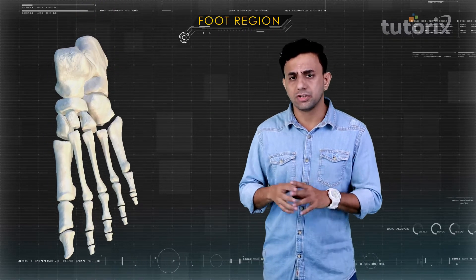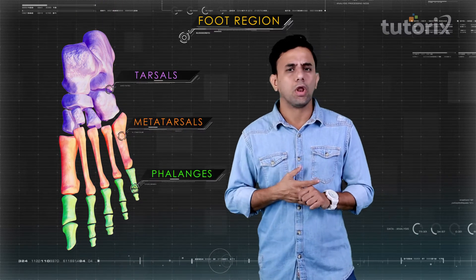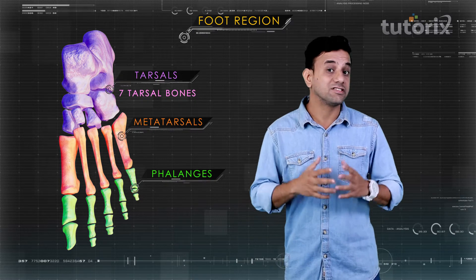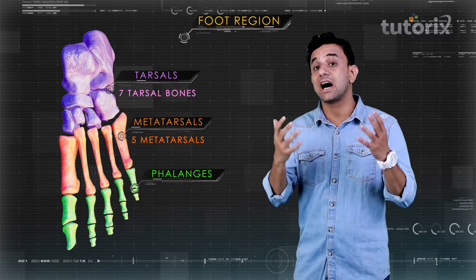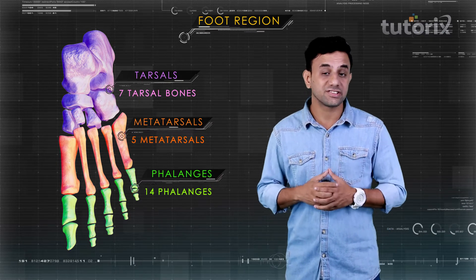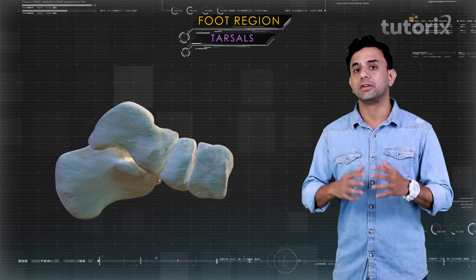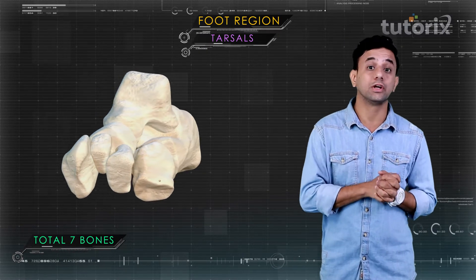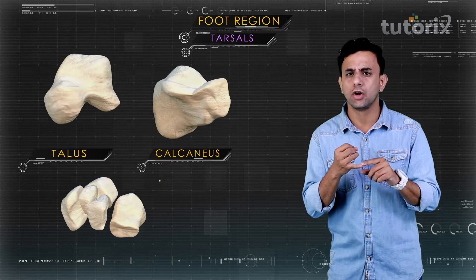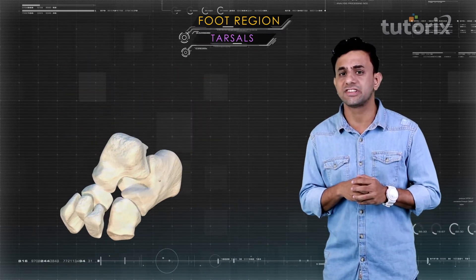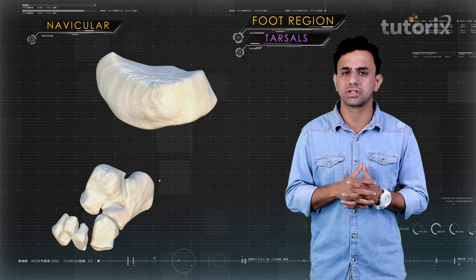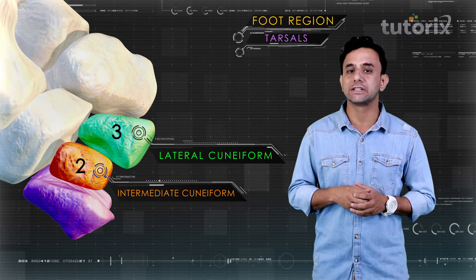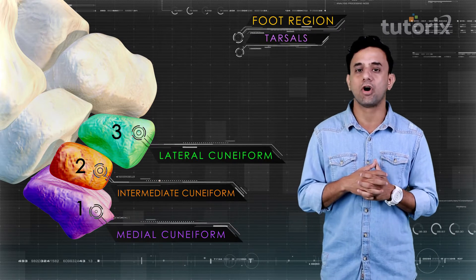Now let's talk about the tarsals, metatarsals, and phalanges. There are seven tarsal bones in the ankle region, called the tarsus. These bones include the talus and the calcaneus, which is the heel bone in the posterior part of the foot; the navicular, shaped like a little boat; three cuneiform bones — the first medial, second intermediate, and third lateral cuneiforms; and the cuboid, which is cube-shaped, in the anterior part of the foot.